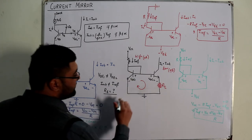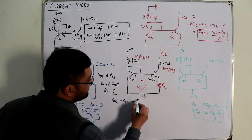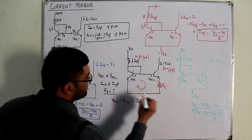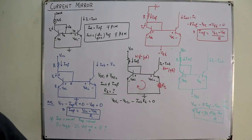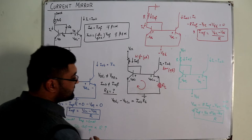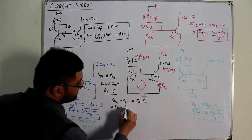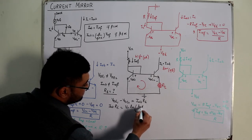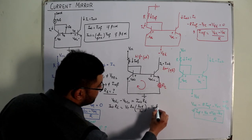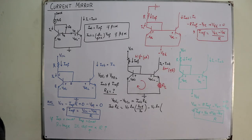Applying KVL to the inner loop: VBE1 minus VBE2 minus I_output times RE = 0. Therefore, I_output times RE = VBE1 − VBE2. Substituting the diode equations: VBE = VT ln(I/I_naught), this becomes VT ln(I_reference / I_naught) minus VT ln(I_output / I_naught).